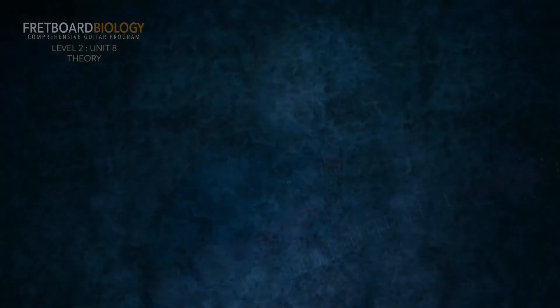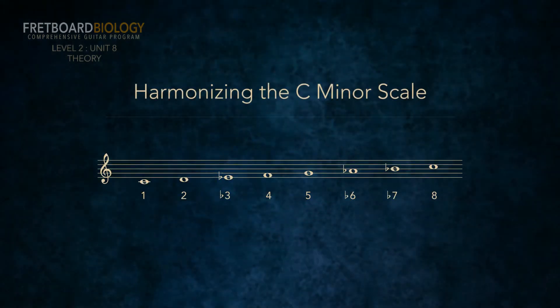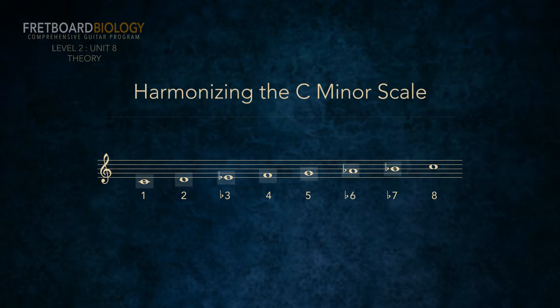Let's harmonize the C natural minor scale with triads. To harmonize the natural minor scale with triads, follow the same procedure used to harmonize the major scale. On the screen, you see the C natural minor scale with the scale degrees numbered one through seven: one, two, flat three, four, five, flat six, and flat seven. Notice that we have flat three, flat six, and flat seven, which is what's different from the major scale.